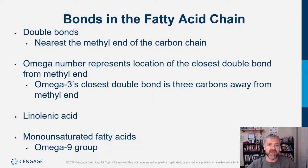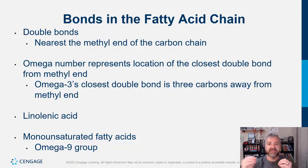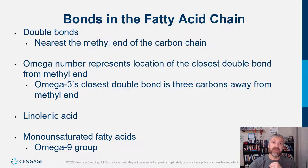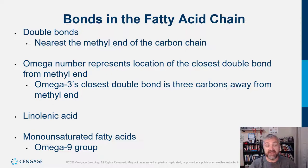The double bonds are nearest to the methyl end of the carbon chain. Omega means the last, so you count from the end of the fatty acid tail inward to find the closest double bond. In an omega-3 fat, the closest double bond is three carbons in. In omega-6, it's six carbons in. In omega-9, it's nine in. That's where the term omega comes from. We'll look at linoleic acid and alpha-linolenic acid — our essential fatty acids — shortly.